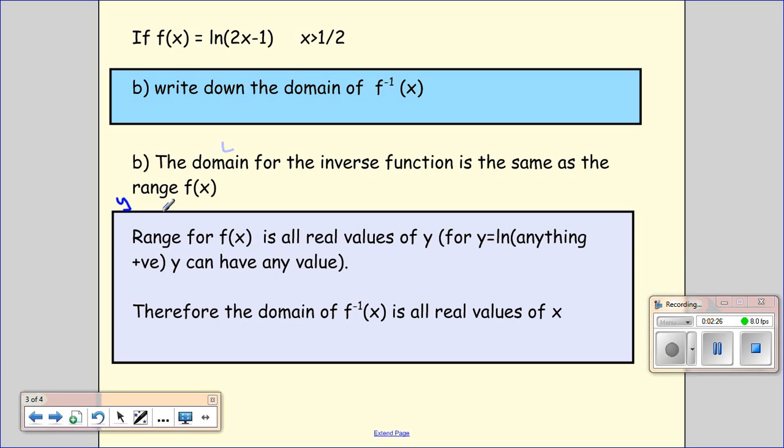So if we start off by thinking about what is the range for f of x. Now when we have ln of anything positive, the y can actually take any value. So if you just sort of sketch it very quickly, it looks something like that. And you can see that we can have any value on the y axis. So it can be all real values of y.